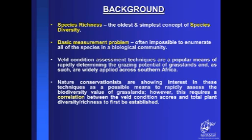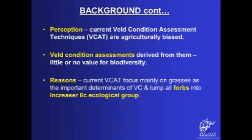However, for this to be possible requires a correlation between veld condition scores and plant species richness to be established. There is also a perception, especially among conservationists, that veld condition assessment techniques are agriculturally biased, and as a result the veld condition assessments derived from these techniques are regarded as having little or no value for biodiversity. The reason for this perception is that current techniques focus mainly on grasses as the important determinants of veld condition, and they lump all forbs into the increaser species functional group.